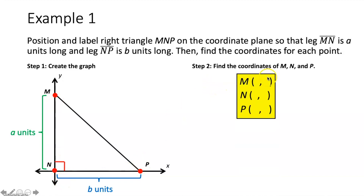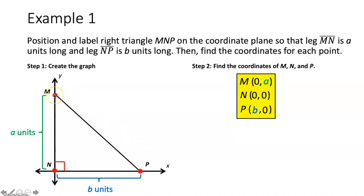Now we label: leg MN is A units long, and leg NP is B units long. Point M is on the Y axis, so its X coordinate is zero, and it's up A units, making M at zero comma A. Point N is at the origin: zero comma zero. Point P is over B units on the X axis, so it's at B comma zero. You could have switched M and P — either arrangement satisfies the parameters.